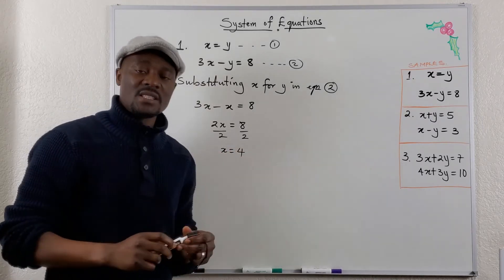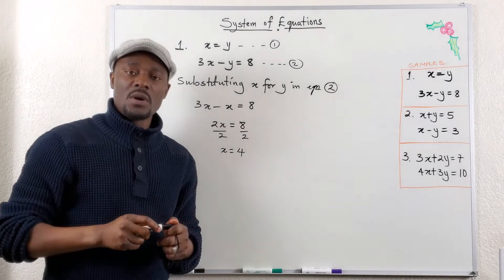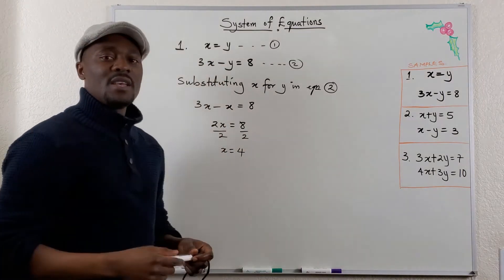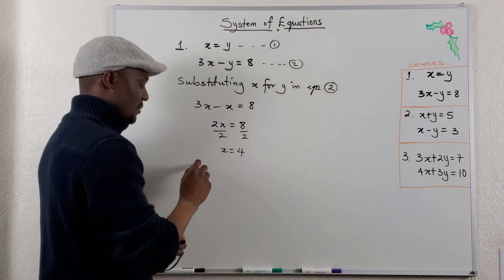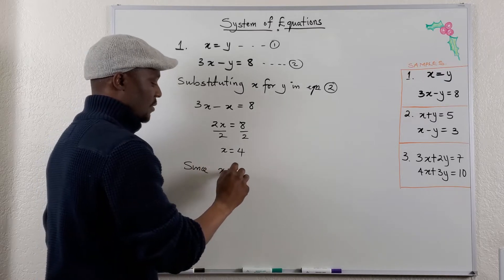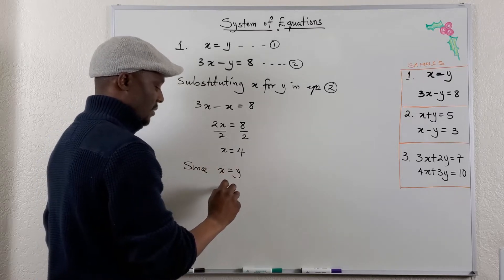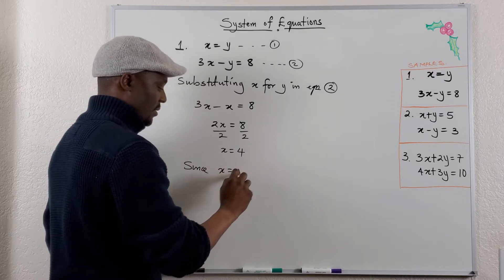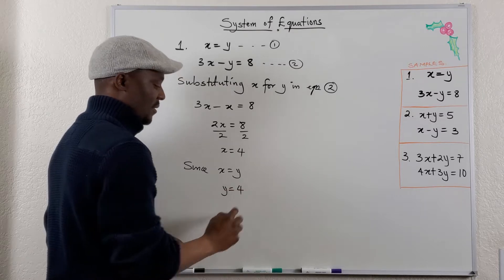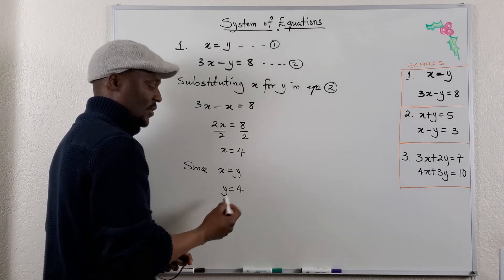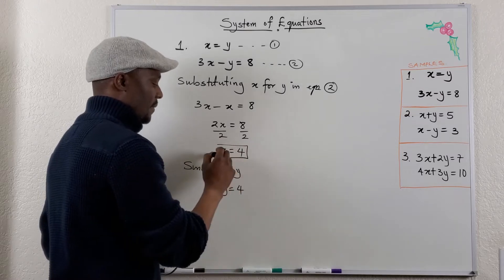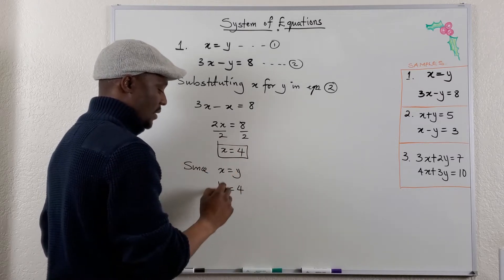Once you get x is equal to 4, you can just know that y is the same thing as 4. Since x is equal to y, y is equal to 4 because x is equal to 4. So you have your answer: x equals 4 and y equals 4.